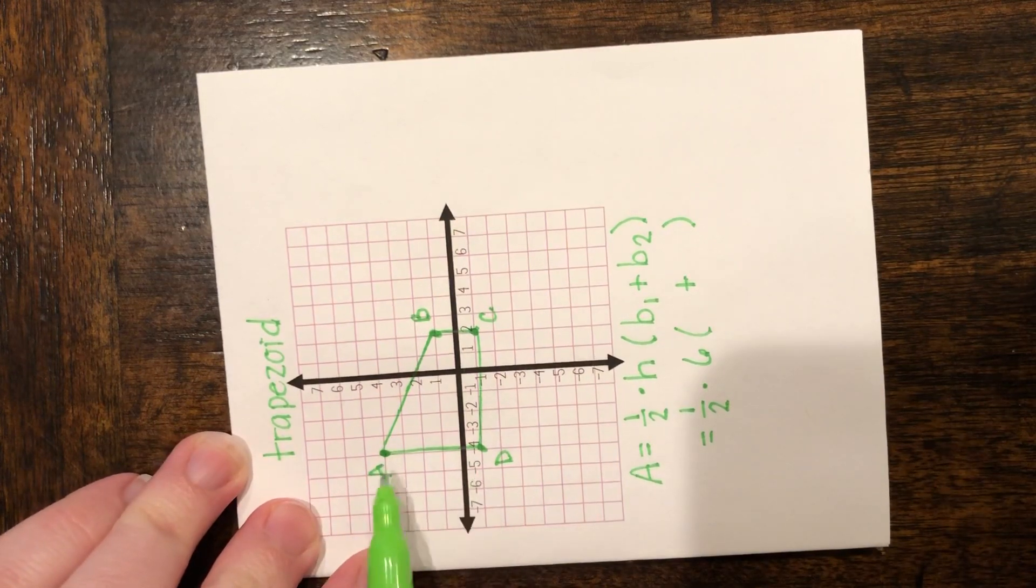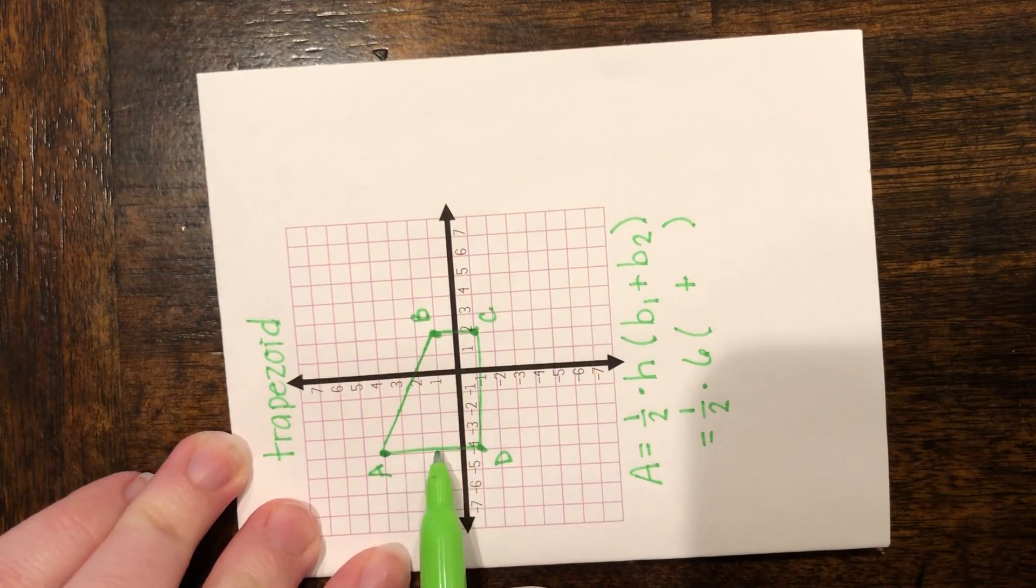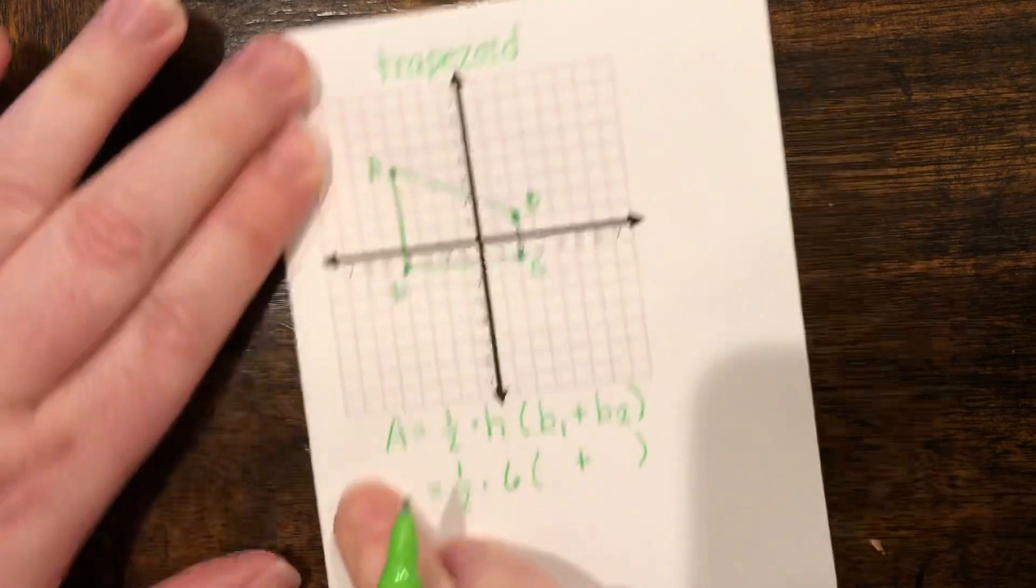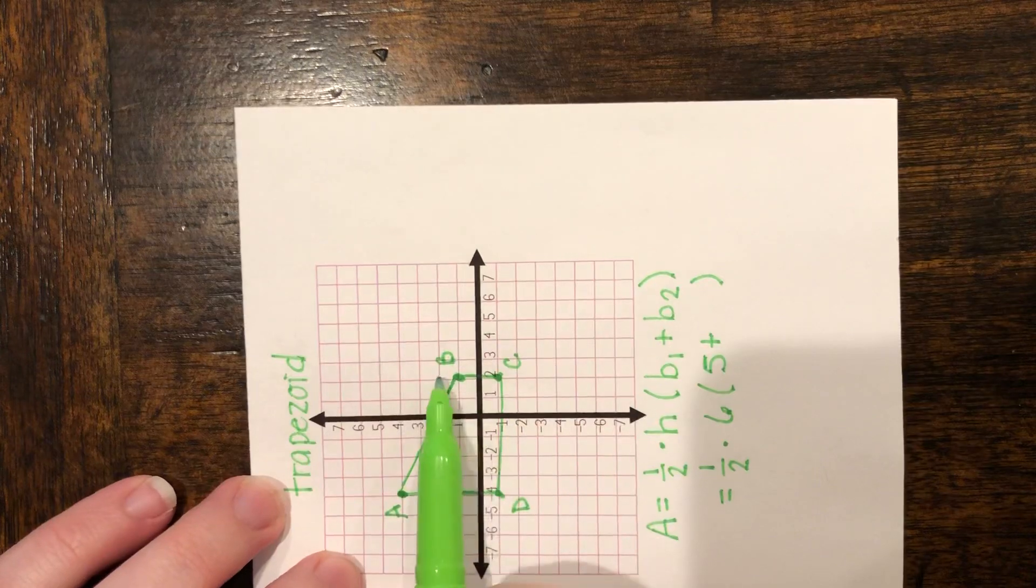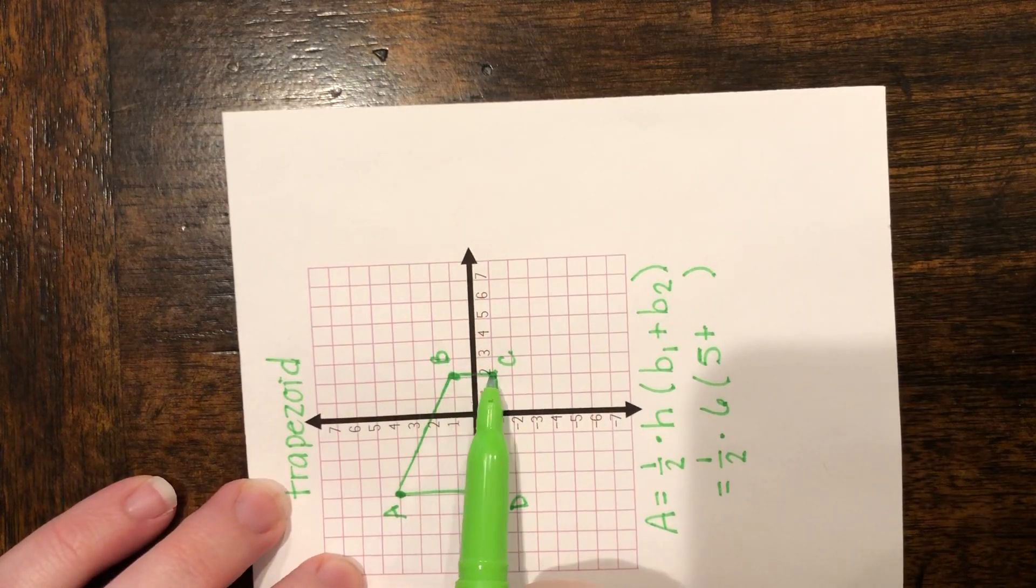So I'm going to do line AD for the first base. So we've got 1, 2, 3, 4, 5 units. And now I'm going to do our other base on the top, line BC, and we have 1, 2 units.